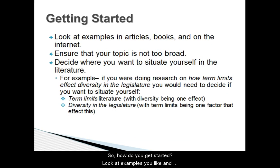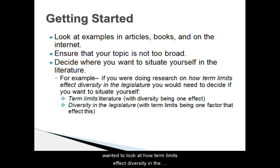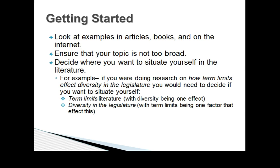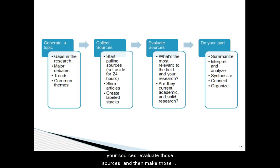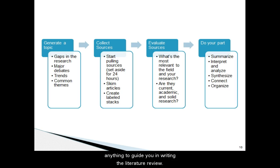So how do you get started? Look at examples you like and make sure your topic isn't too broad — a quick search in the databases should help you determine that. You can always meet with a reference librarian for assistance. Also consider where you want to situate yourself: for example, if you want to look at how term limits affect diversity in the legislature, would you look at term limit literature, diversity in the legislature, or both? The four steps are to generate a topic, collect your sources, evaluate those sources, and then make connections. Just be careful that your topic isn't such a large gap that there isn't anything to guide you in writing the literature review.